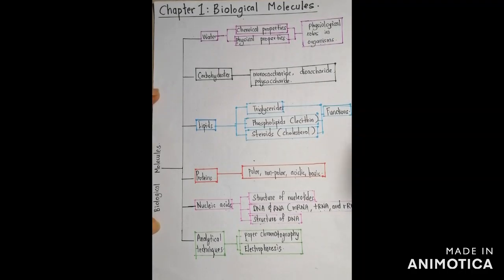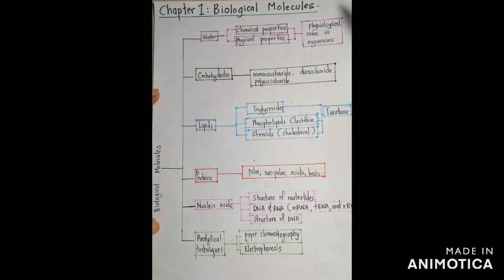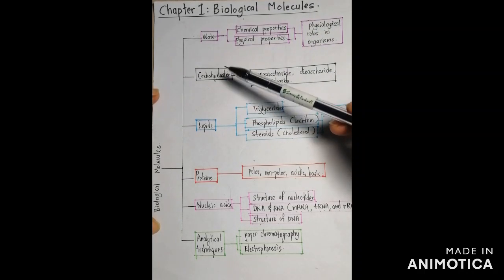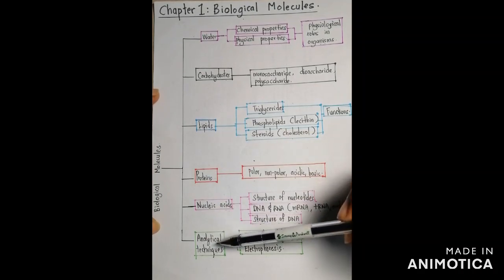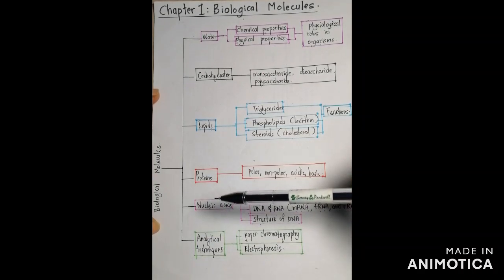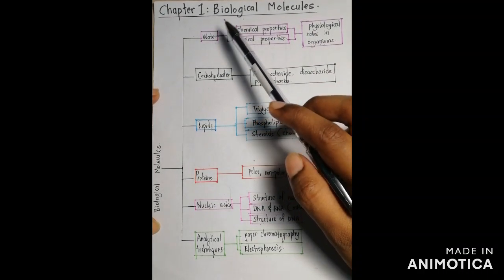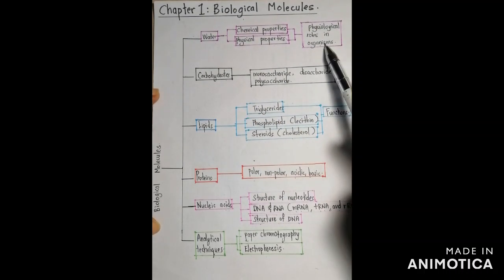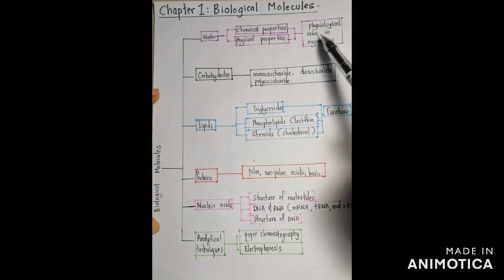Hi friends, today we are going to study about Chapter 1: Biological Molecules. In this chapter we have six subunits: water, carbohydrates, lipids, proteins, nucleic acids, and analytical techniques. Today we'll be studying about subtopic 1.1, which is water — its chemical properties and physiological roles in organisms, as well as its physical properties and physiological roles.